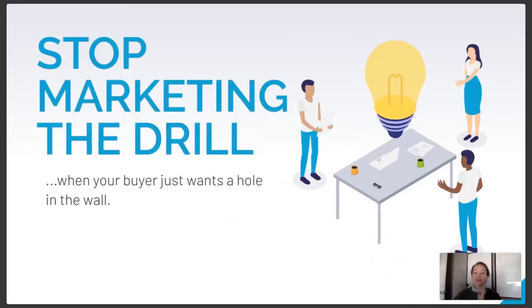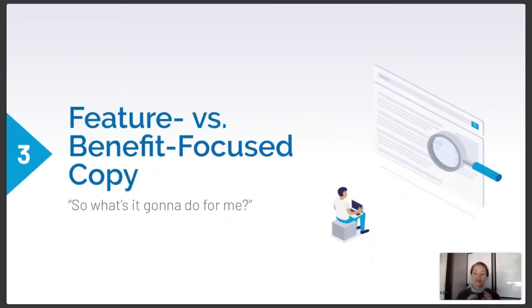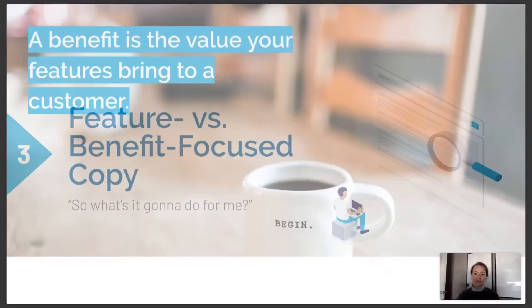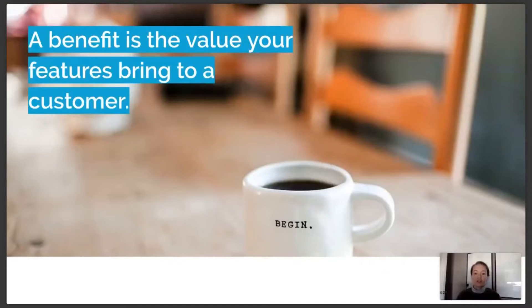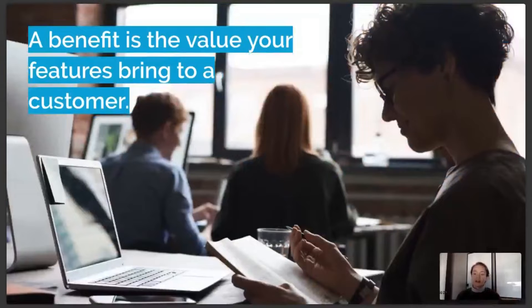Let's focus on how we can market what our product and services do for our audience, and that's about creating benefit-focused copy and content. Kinsta has a great article about the difference between feature-focused and benefit-focused copy. Features are really just a slice of business functionality, and each feature has a corresponding benefit to your product's user. The benefit is the value those features bring to your customer — and that's what we really want to start focusing on.